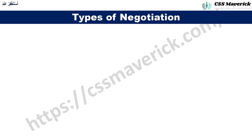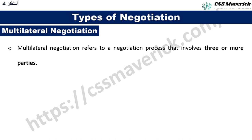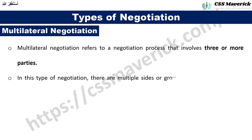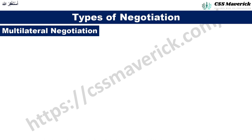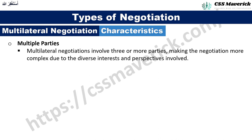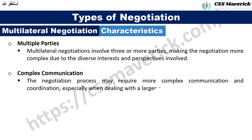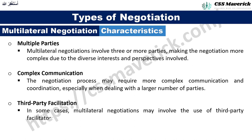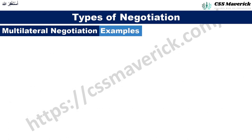Multilateral negotiation refers to a negotiation process involving three or more parties with varying interests who engage in discussions to find common ground and reach a consensus. Its characteristics include: multiple parties, making the process more complex due to diverse interests; complex communication requiring coordination among a larger number of parties; and third-party facilitation, where mediators may assist in communication and finding common ground.